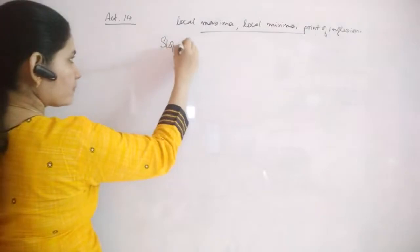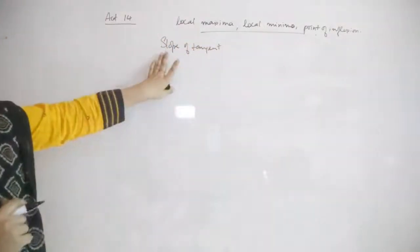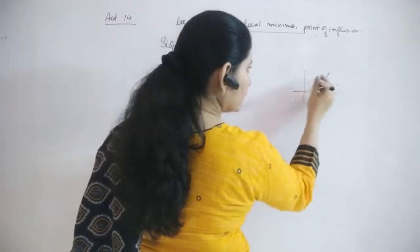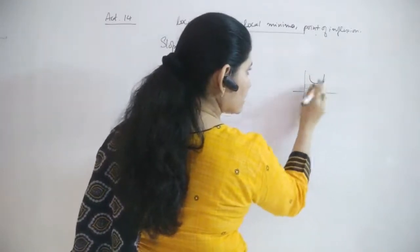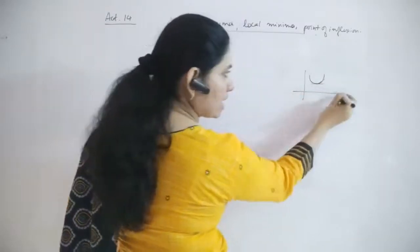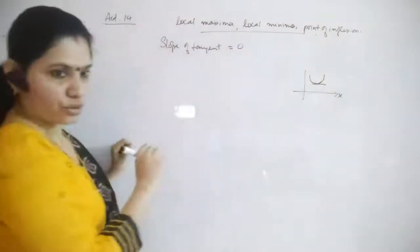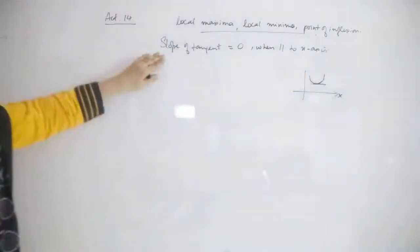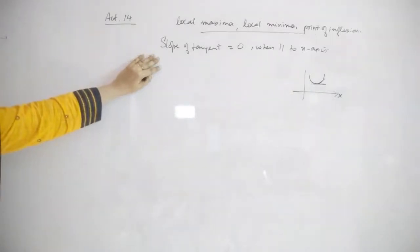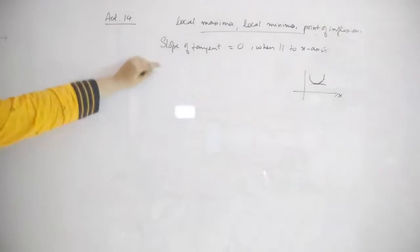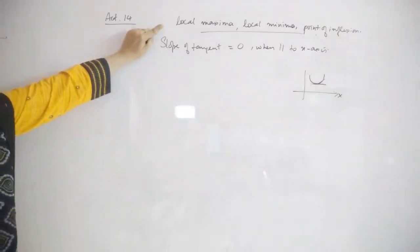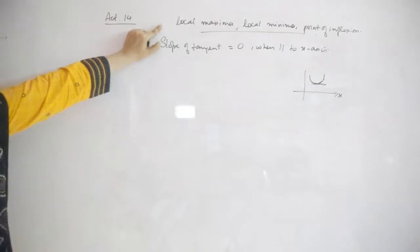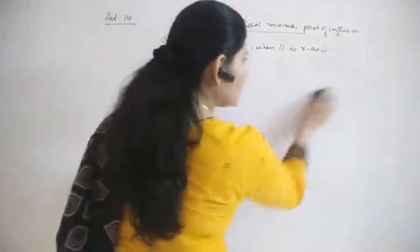You also need to understand slope of the tangent when it is parallel to the x-axis. When a tangent is parallel to the x-axis, the slope is 0. Additionally, you should know local maxima, local minima, and point of inflection, which we will now explain using the first derivative test.